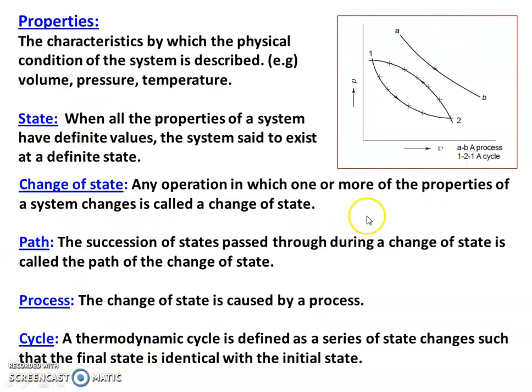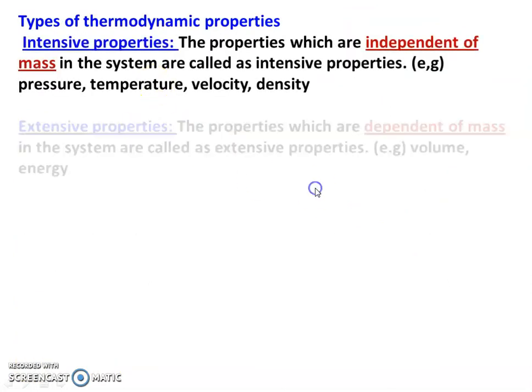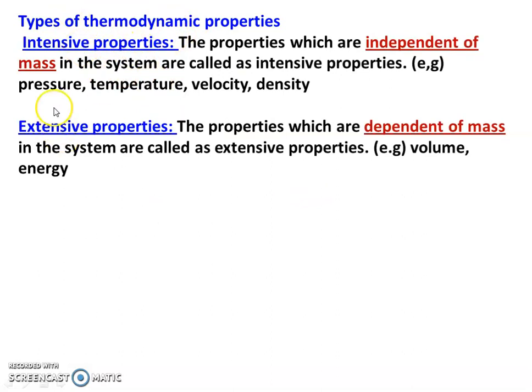Types of thermodynamic properties: there are two types. One is intensive property, another is extensive property. The property which is independent of mass of the system is called intensive property. Intensive properties are independent of mass — if you change the mass, the property will not change. Examples: pressure, temperature, velocity, density. These properties have the same value regardless of mass — that is called intensive property.